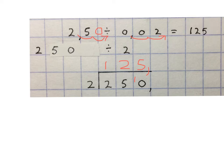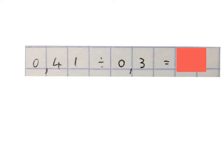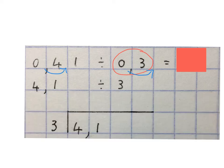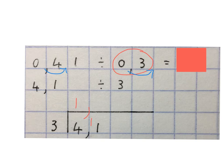Next problem: 0.41 divided by 0.3. Move the comma to the right in both numbers until the divisor is a whole number. We get 4.1 divided by 3. Do a normal division sum — put the 3 on the outside, 4.1 on the inside. First, take the comma and put it in the answer. Then 3 goes into 4 once, with 1 remaining, which we carry. Then 3 goes into 11: 3 times, but 3 times 3 is 9, so there's 2 left.